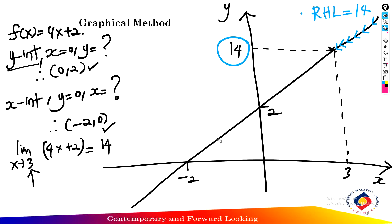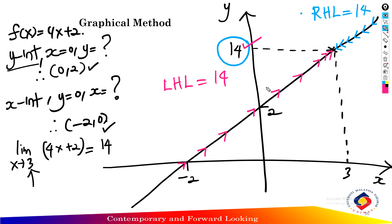From the left of the function, trace x values approaching 3 from the left — starting from -2, -1, 0, 1, 1.9, 1.999 — and the y values approach 14. So the left-hand limit equals 14. The limit approaches the same value from both sides, and the conclusion is: the limit as x approaches 3 of 4x plus 2 exists and equals 14.